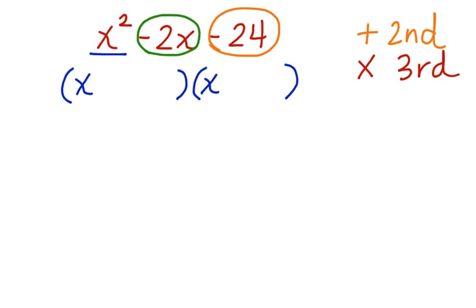So let's think about it. What two numbers could multiply together to give 24? Well we could have 12 times 2. We could have 6 times 4. We could have 8 times 3. 12 times 2 multiplies together to give us 24, but it doesn't add together to give us negative 2. That won't work.